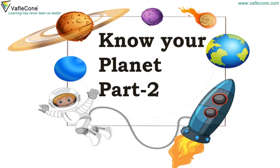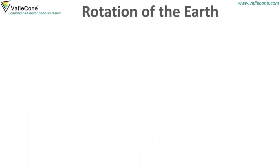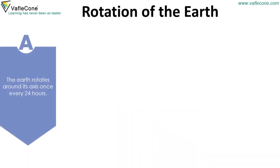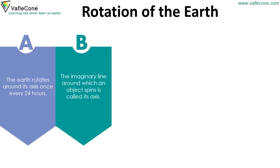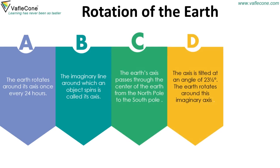Know Your Planet Part 2: Movement of the Earth. The Earth rotates around its axis once every 24 hours. The imaginary line around which an object spins is called its axis. The Earth's axis passes through the center of the Earth from the North Pole to the South Pole, and is tilted at an angle of 23.5 degrees.